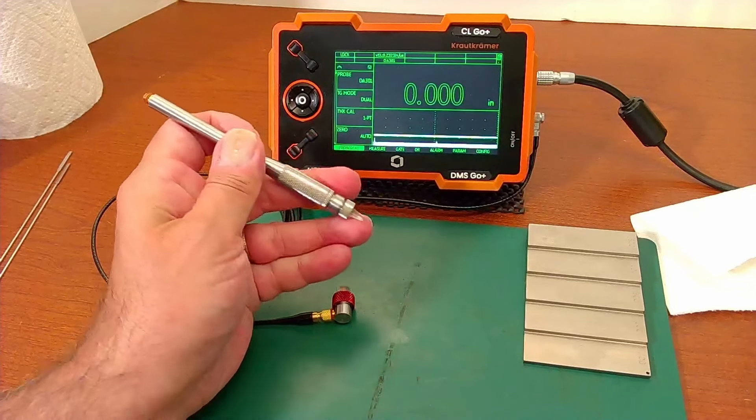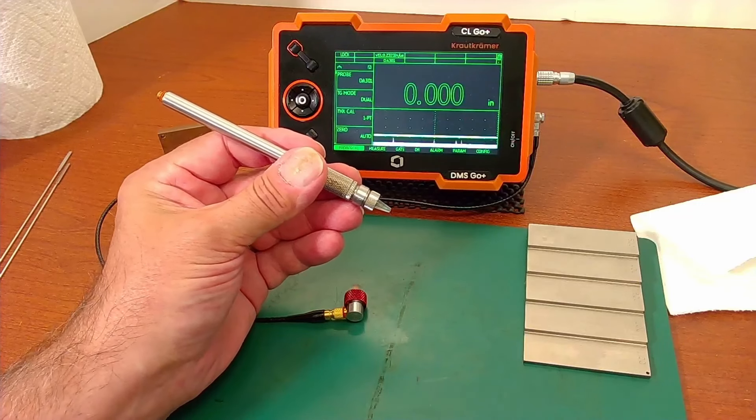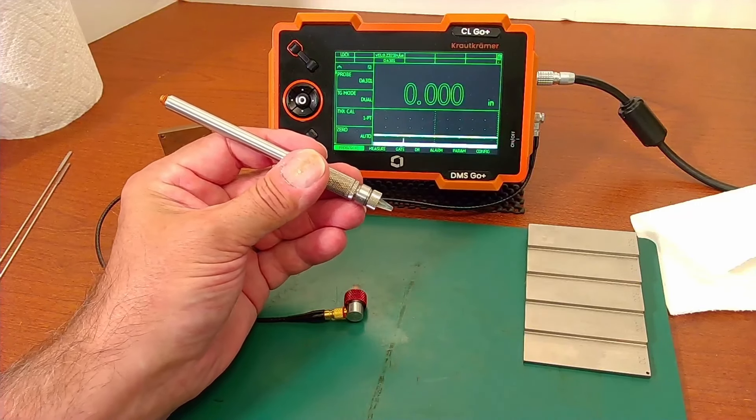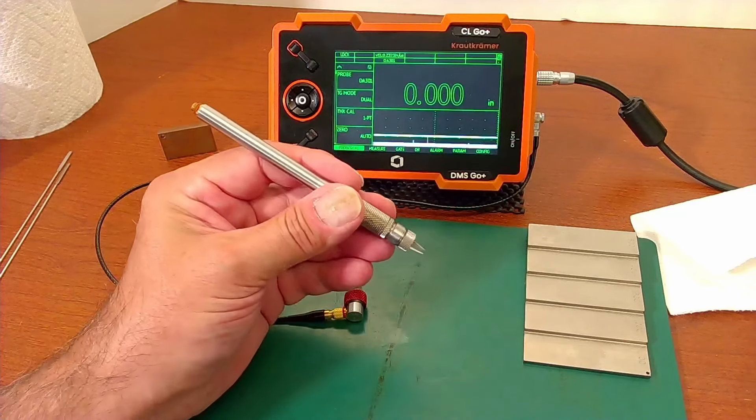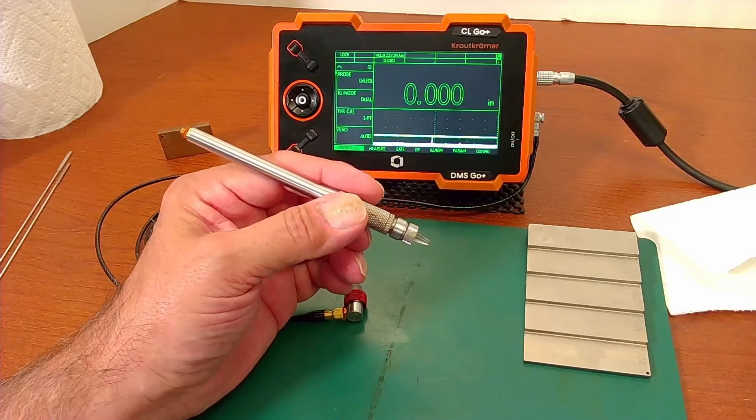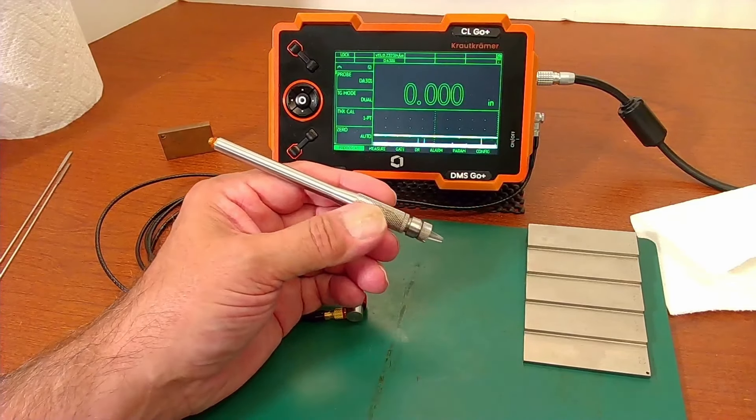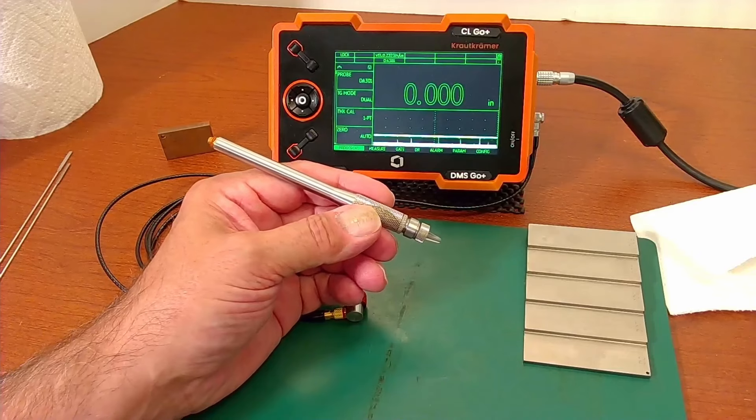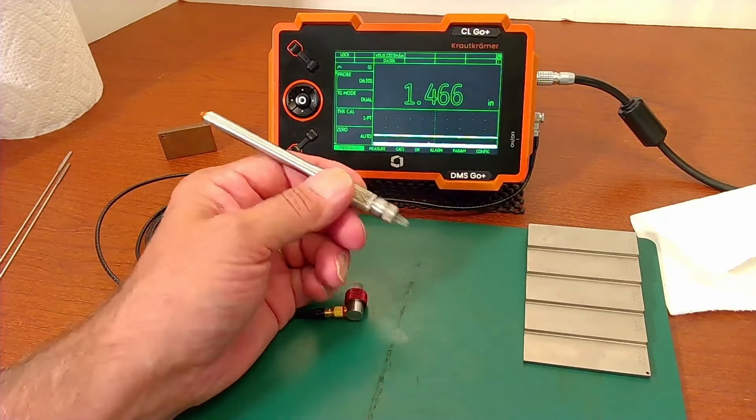One of the real advantages of the DMS Go is almost all of the instrument setup parameters are available to you as a user. We give you the predefined setups to make it a lot faster to get a probe connected, calibrate, and get inspecting. But you can make the instrument work with a great many different probes that maybe weren't specifically designed for thickness gauging or use with the DMS.